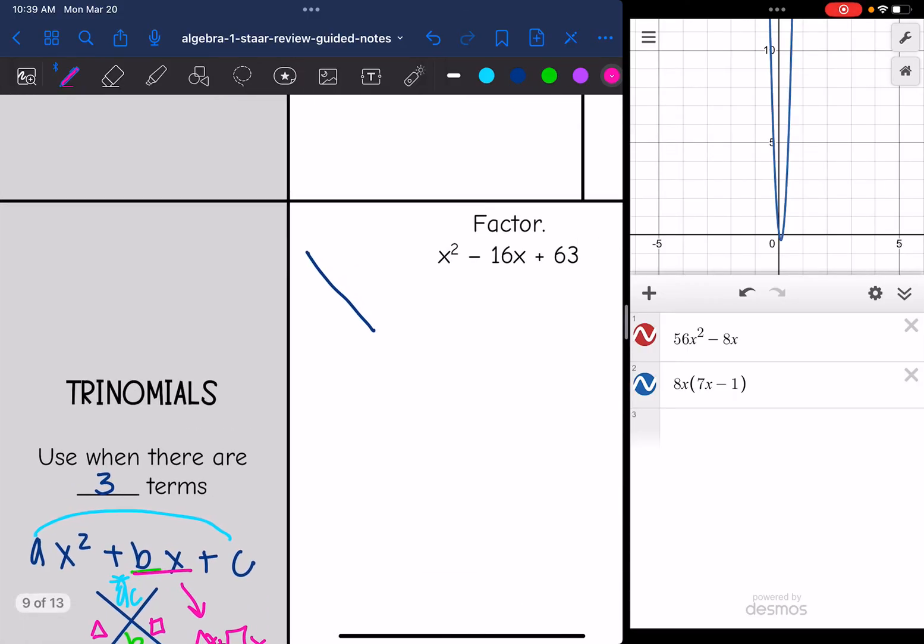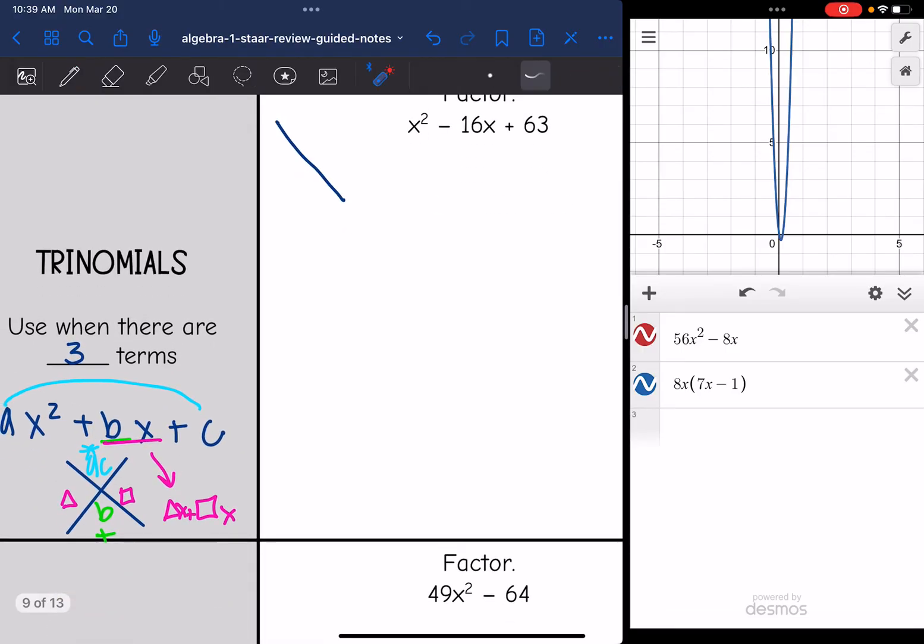Okay, on this one, we don't have to go through the grouping part because this is just a basic trinomial. And there was no GCF because there's no number here and they don't all have an x in them. So just a basic trinomial. I just have to figure out what two numbers multiply to 63 and add to negative 16.